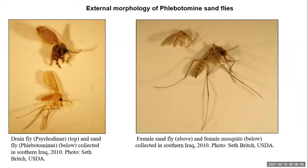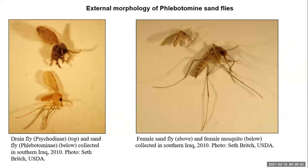To differentiate the phlebotomine sandfly from similar-looking insects: compared to the drainfly, also a psychodid, the sandfly's wings are lanceolate and tapering, more slender, with long legs, while the drainfly has more rounded wings, is broader, and has short legs. Compared to the mosquito, the sandfly is really small. When not flying, the sandfly's wings are usually erect and held in a V-shape.